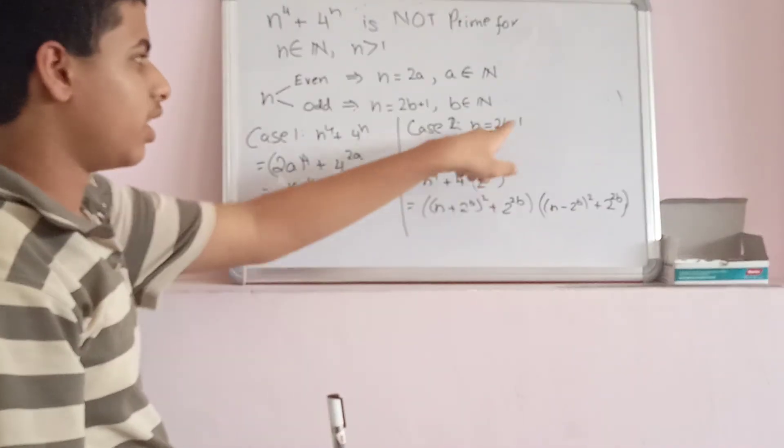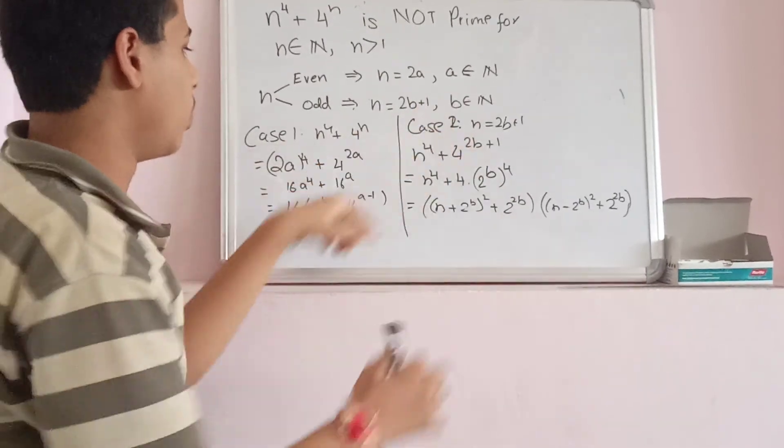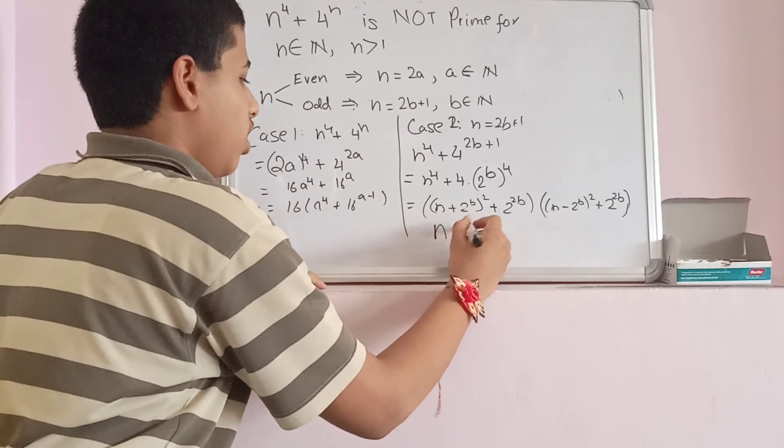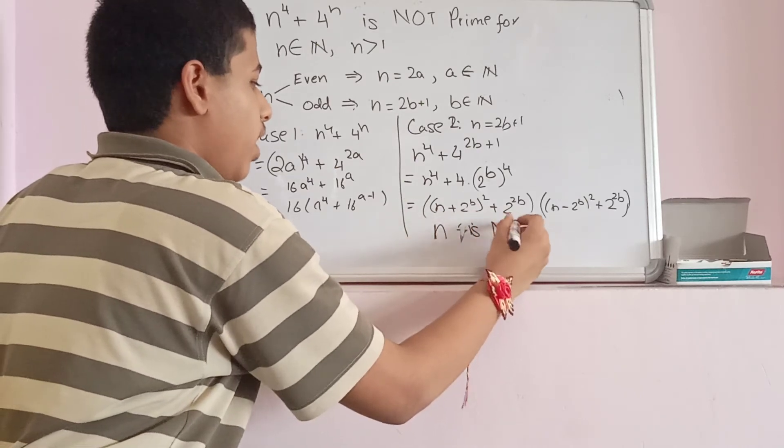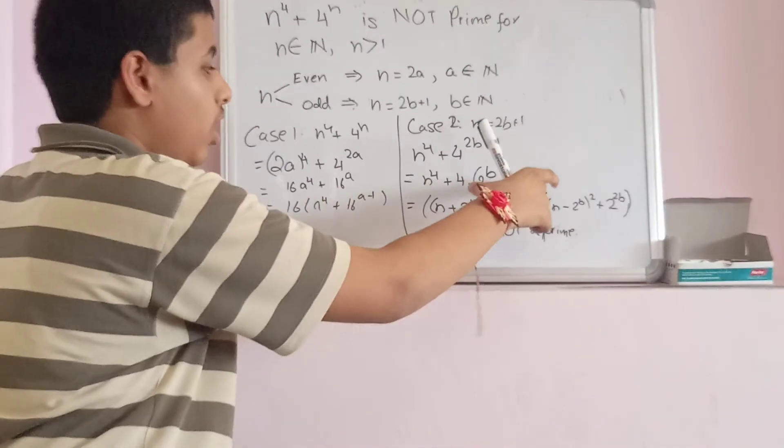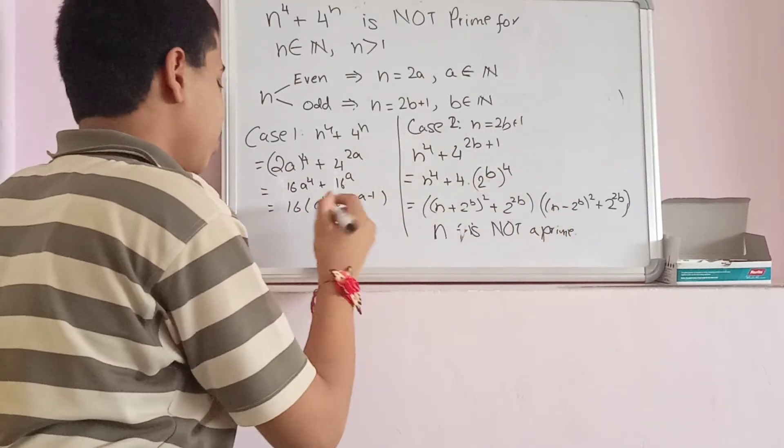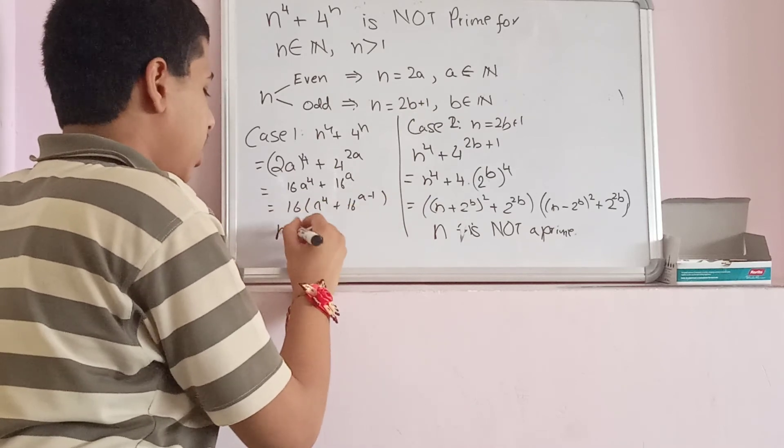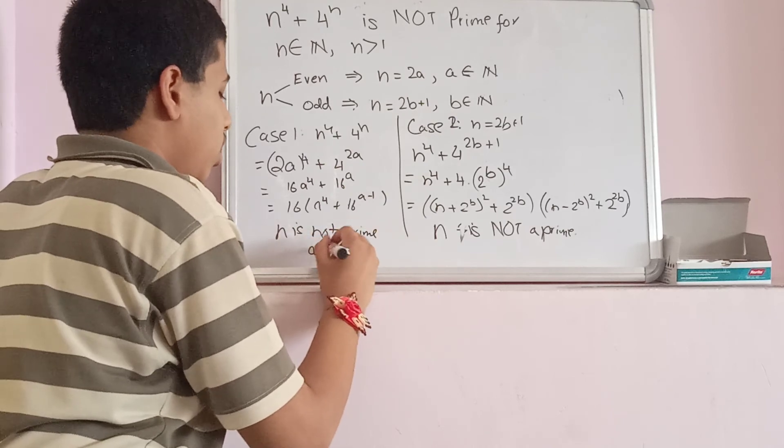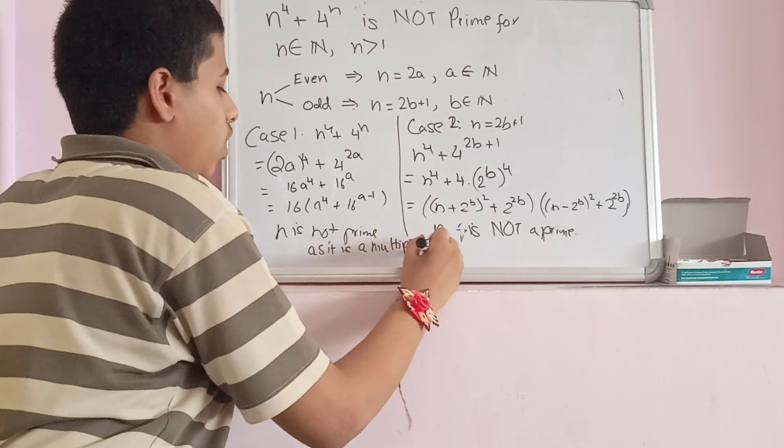And since I can represent this as a product of 2 integers which are not 1, n is not a prime because I could represent it as the product of 2 integers where none of them is 1. And in this case, n is definitely not prime because it is a multiple of 16.